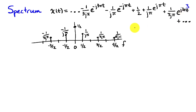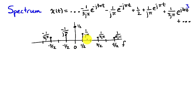The spectrum of x of t is given by these coefficients multiplying the complex sinusoids, located at the frequencies corresponding to those sinusoids. At frequency one half hertz, the coefficient is 1 over j pi, so the spectrum has a component at one half hertz with complex amplitude 1 over j pi. Similarly, there is a component at three halves hertz with amplitude 1 over 3 j pi, and so on.